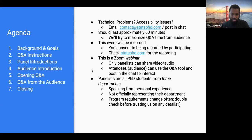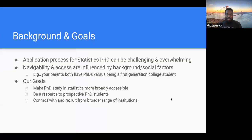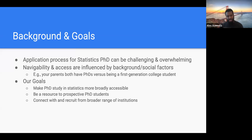The background and goals: applying for a stats PhD — or grad school in general — is pretty difficult and involves a lot of steps and processes that you may not be familiar with. Access people have to the process is influenced by things they have no control over. We really want to make the application process and the actual PhD itself more accessible for anyone interested in pursuing a PhD in statistics.